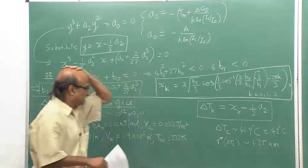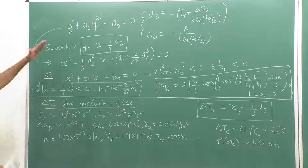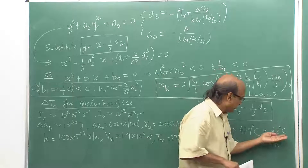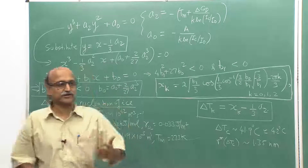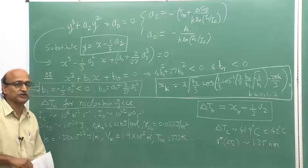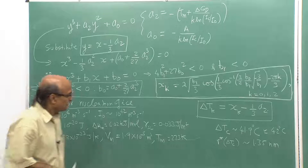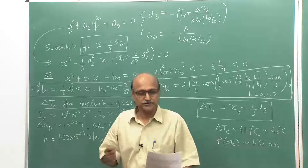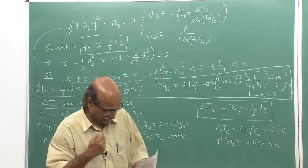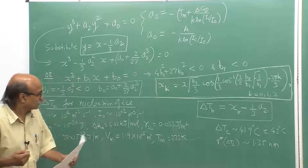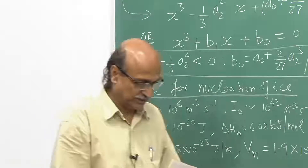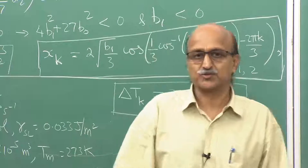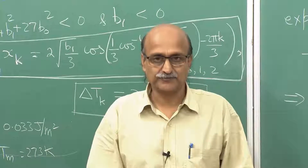In conclusion, homogeneous nucleation of ice requires a very large undercooling of around 42°C, and this is true for many systems — the undercooling required for homogeneous nucleation is very large. This concludes the lecture; we will continue with further aspects of the rate of nucleation.